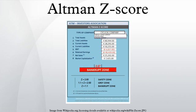The original Z-score formula is: Z = 1.2·T1 + 1.4·T2 + 3.3·T3 + 0.6·T4 + 0.99·T5. T1 = working capital / total assets — measures liquid assets in relation to the size of the company. T2 = retained earnings / total assets — measures profitability reflecting the company's age and earning power. T3 = earnings before interest and taxes / total assets — measures operating efficiency apart from tax and leveraging factors, recognizing operating earnings as important to long-term viability. T4 = market value of equity / book value of total liabilities — adds a market dimension that can show up security price fluctuation as a possible red flag. T5 = sales / total assets — standard measure for total asset turnover.